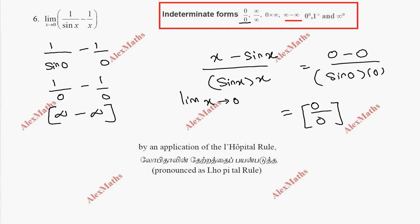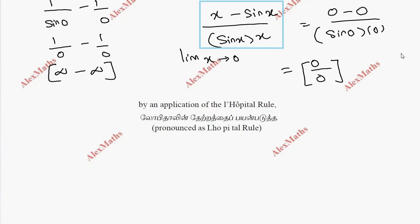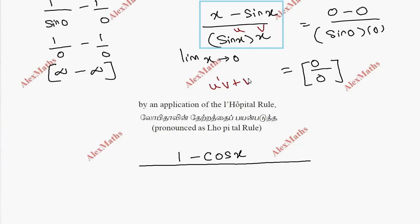If we apply L'Hôpital's rule, we differentiate the numerator and denominator. Numerator: d/dx(x - sin x) = 1 - cos x. For the denominator sin(x)·x, we follow the product rule (uv method): u'v + uv'. So u' = cos x, v = x, plus u = sin x, v' = 1.